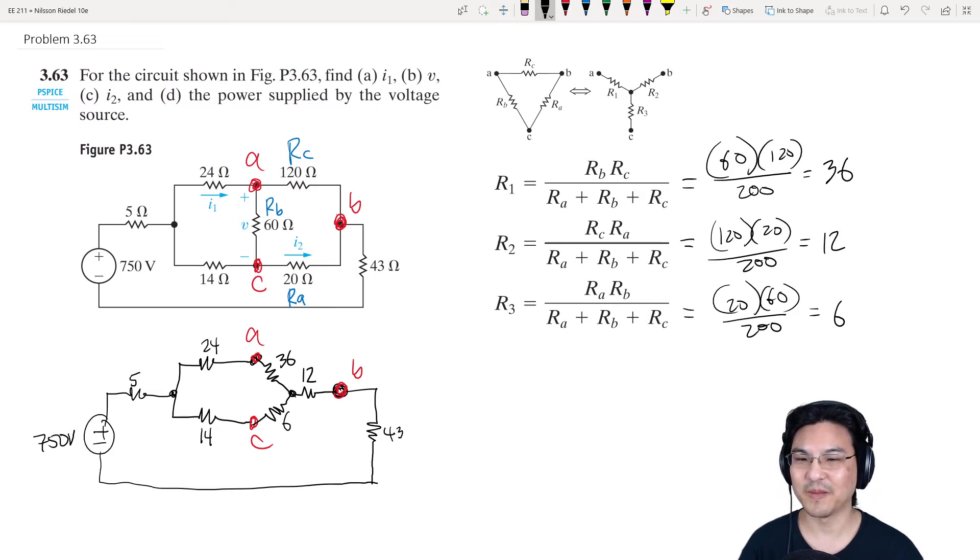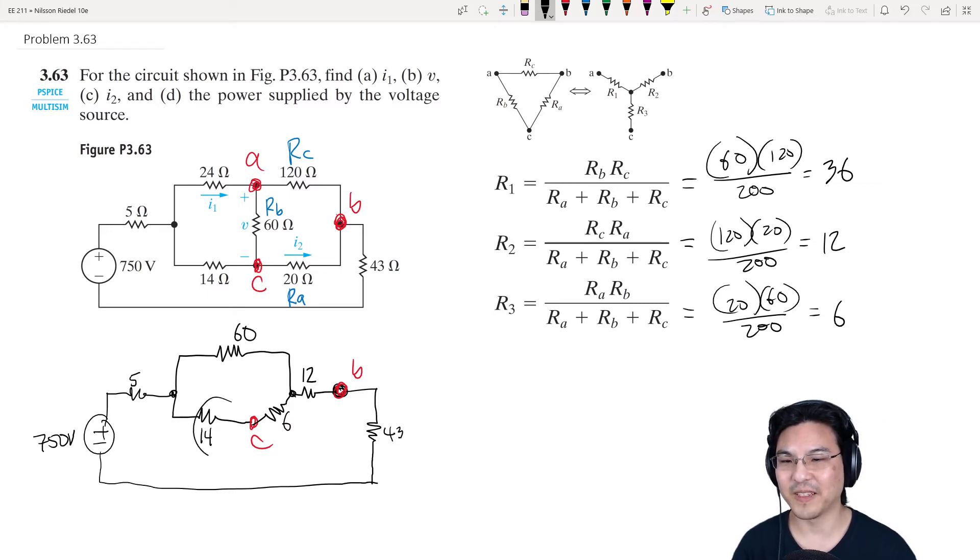Already this looks much easier to analyze. Like the 24 and the 36, you can just combine those in series. So that would be 60. So I'm just going to draw that right now to save space. This is 60. And then the 14 and the 6 you can combine in series, so that would turn into 20. I'm just going to write that right here.